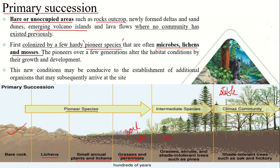The climax community is very stable and can endure for hundreds of years — for example, a fully developed rainforest. The first plants to colonize an area are called the pioneer community or pioneer species. The stages leading to the climax community are called successional stages or intermediate species, and are sometimes referred to as the seral community. So succession starts with pioneer species and ends with the climax community, with the transition carried out by the intermediate or seral community.